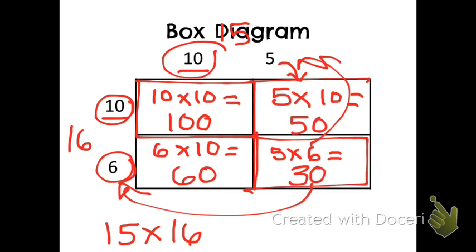Now, thinking to yourself, what do we call each one of these numbers in my box diagram? I'm hoping you just said partial products. And with partial products, we always add.